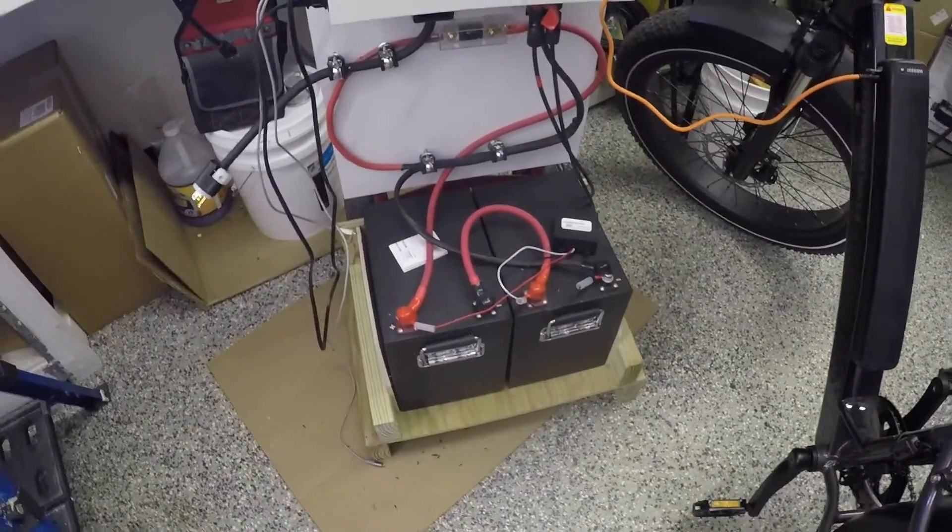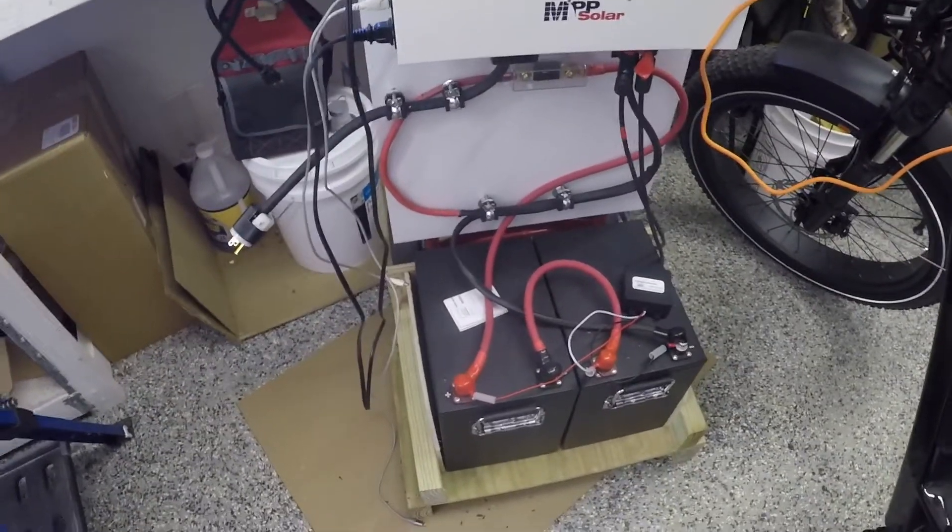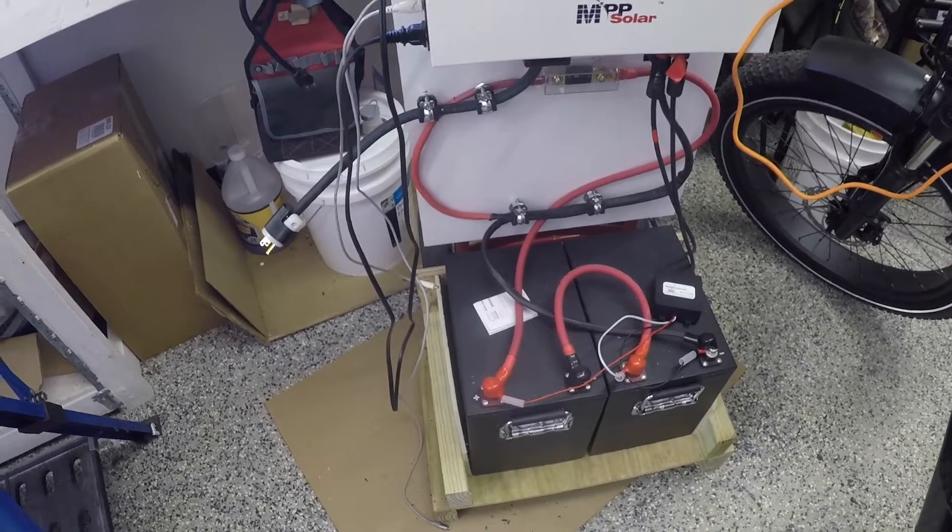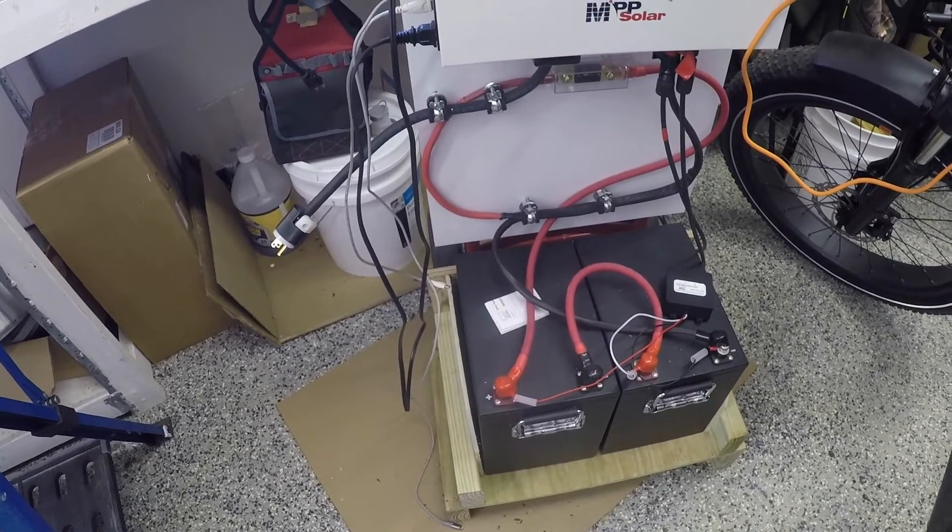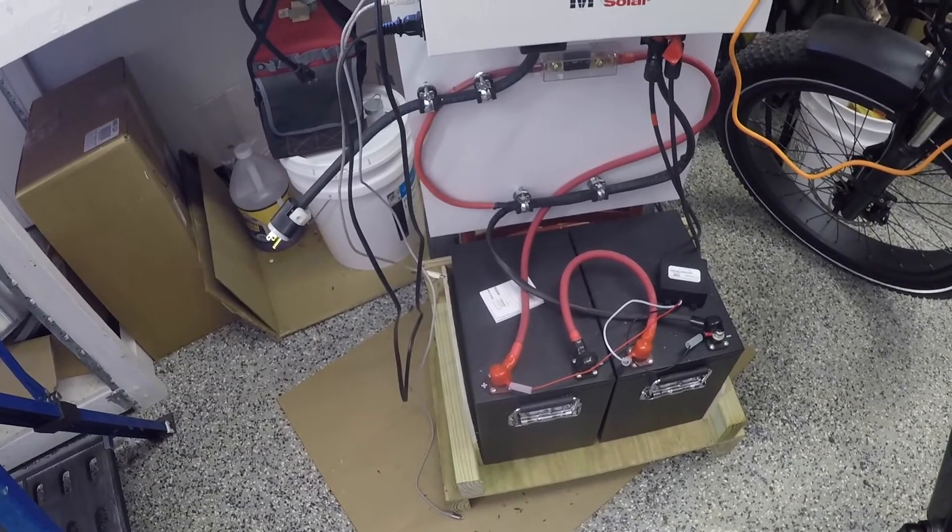So we're still charging the e-bike. Now these two batteries here, these are lithium iron phosphate batteries. They are guaranteed for over 3,000 cycles, and that's charging and discharging every day for 3,000 times.